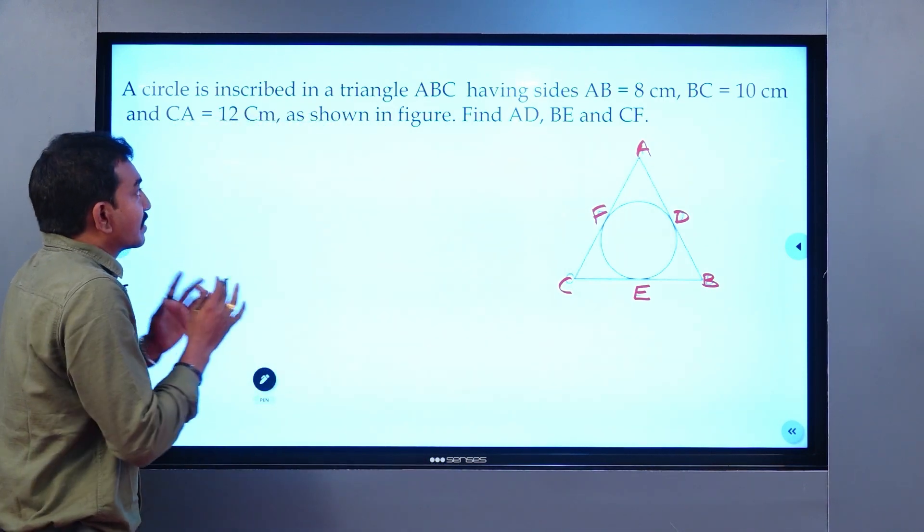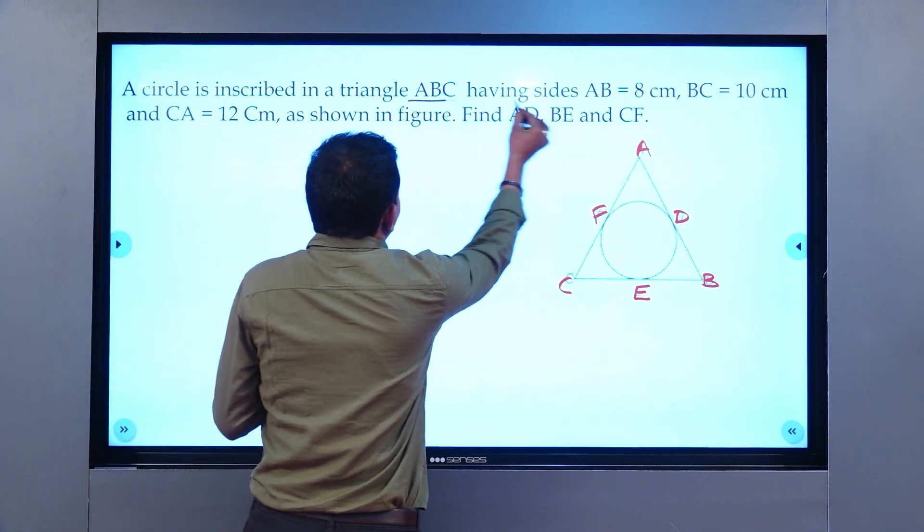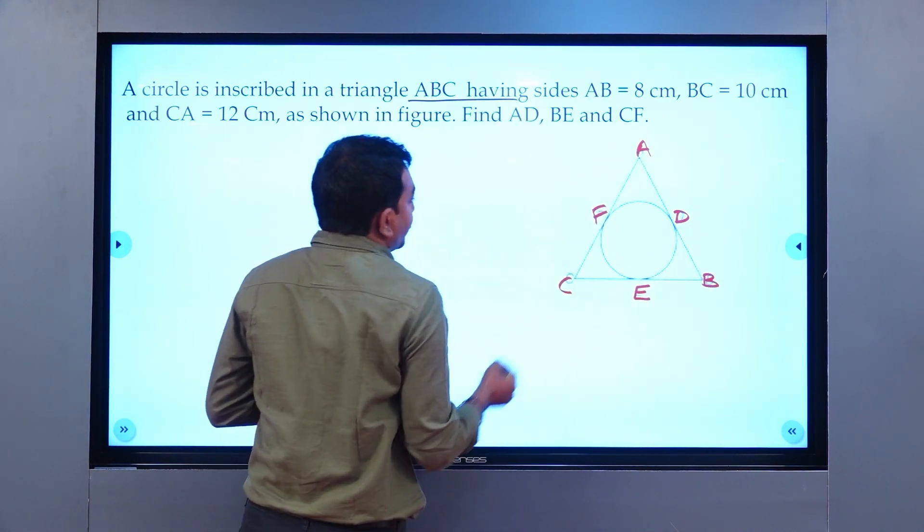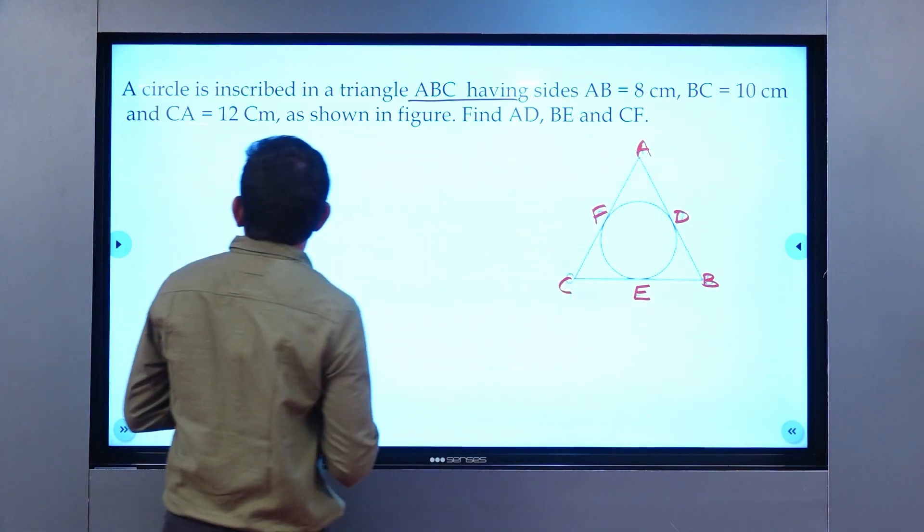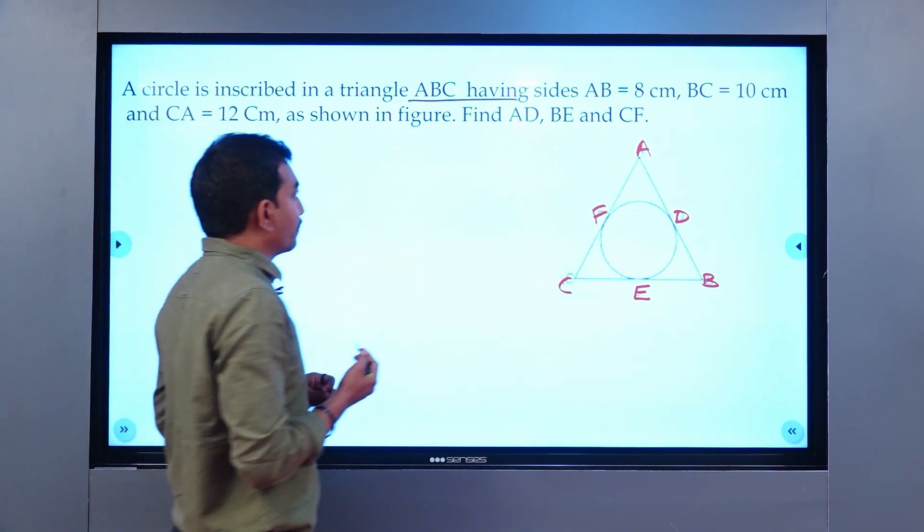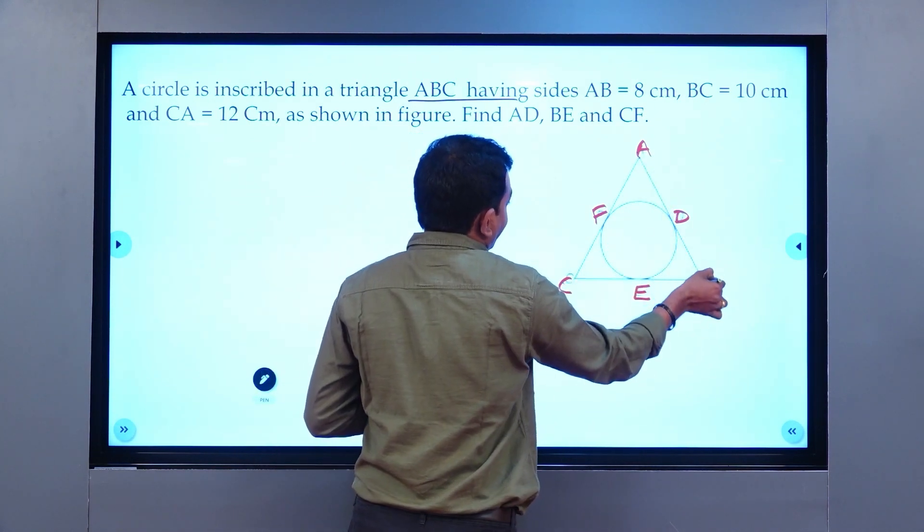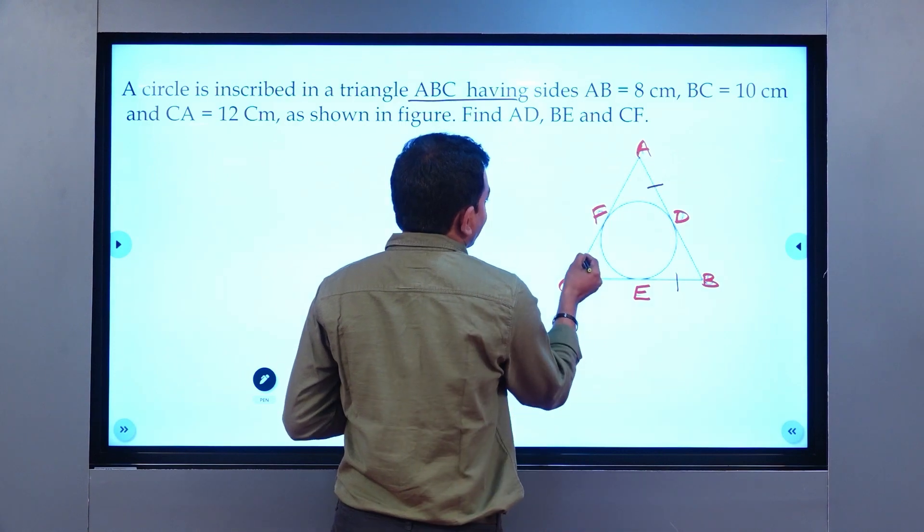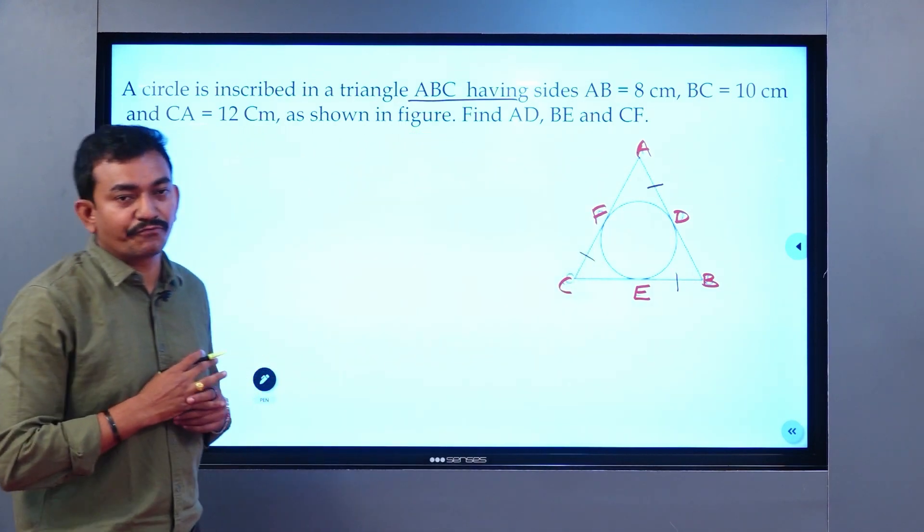A circle is inscribed in a triangle ABC having sides AB=8cm, BC=10cm, and CA=12cm as shown in the figure. Find the lengths of the tangents AD, BE, and CF.